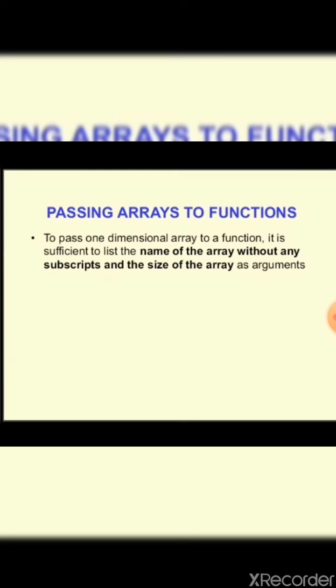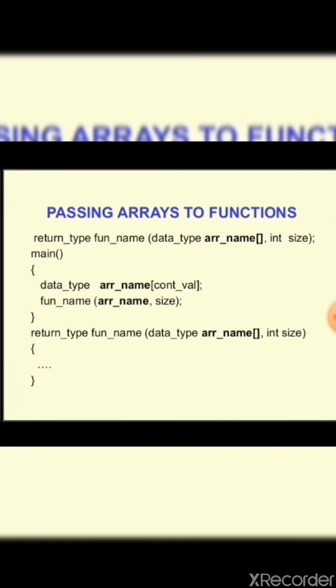Now we'll see how to pass an array to a function. This is the same as sending one variable to the function, but there is a little difference in syntax. While sending the array to the function, we write just the array name without a subscript. While receiving, we write the subscript but do not mention any value inside the square brackets — in both the function declaration and function definition parts.